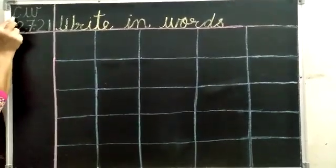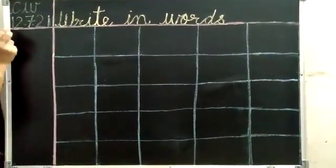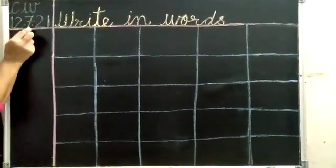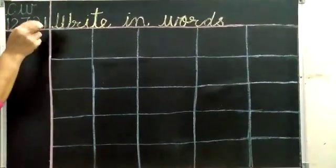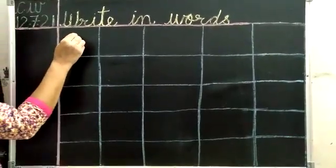First of all, children, write down CW for classwork, and today's date is 12.7.21. So let's begin.